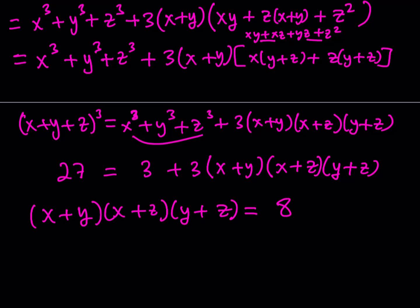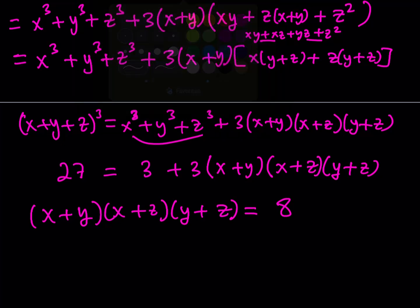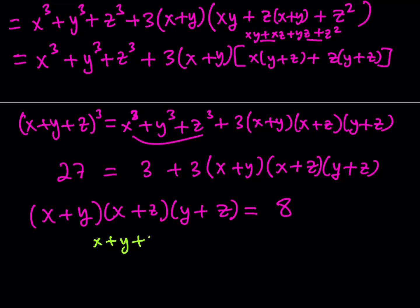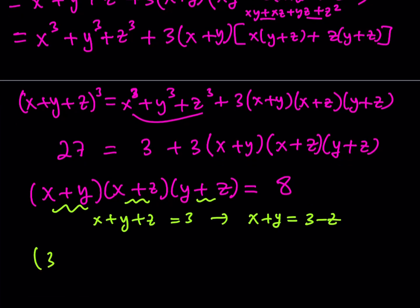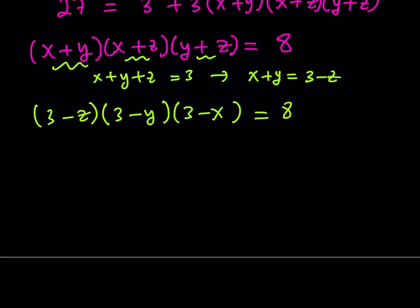Now, since x + y + z = 3, we can replace x + y with 3 − z, x + z with 3 − y, and y + z with 3 − x. So our equation becomes (3 − z)(3 − y)(3 − x) = 8. The reason I converted to this form is that each factor now contains only a single variable.